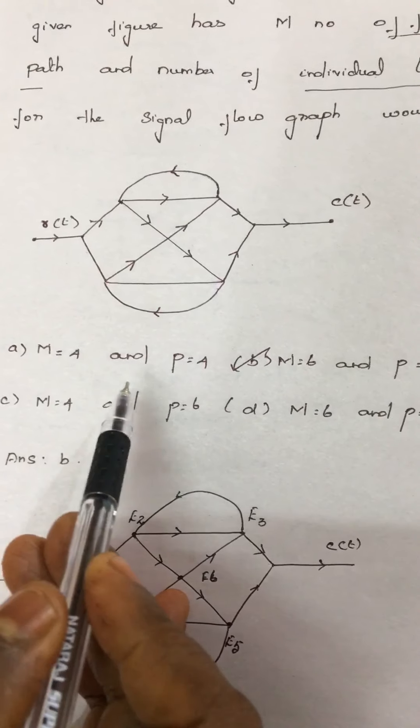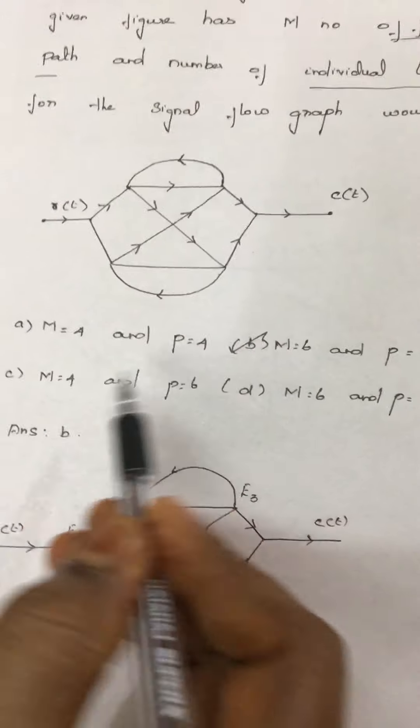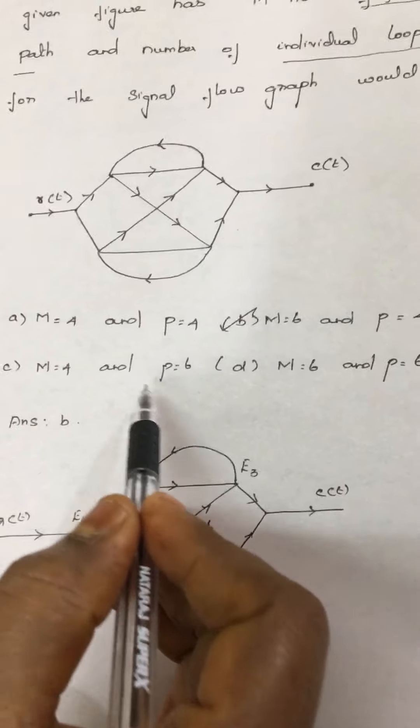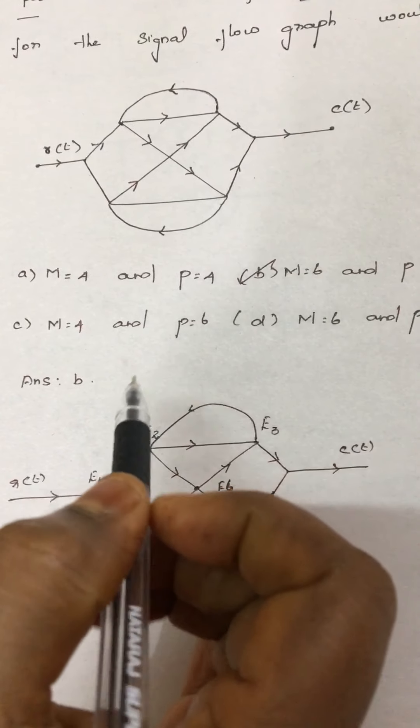Option A: M is equal to 4 and P is equal to 4. Option B: M is equal to 6 and P is equal to 4. Option C: M is equal to 4 and P is equal to 6. Option D: M is equal to 6 and P is equal to 6.